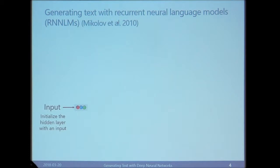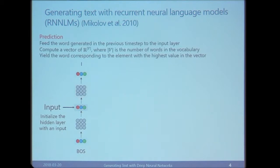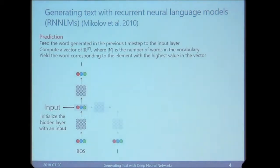Before explaining the encoder-decoder architecture, let me review the process of generating a sentence with a recurrent neural language model. We first initialize the hidden layer, then feed a start symbol to the network. We compose the hidden state and compute a vector with V dimensions, where V is the number of words in the vocabulary. The element with the highest value corresponds to a word — say, 'I' — which we yield as output. We then feed that word back to the model and make a prediction for the next word.